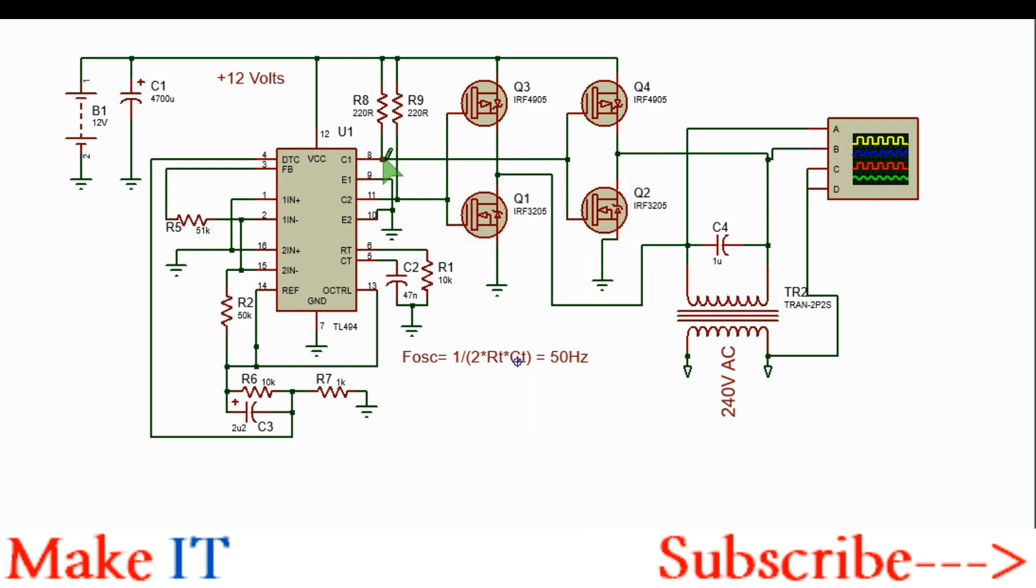When pin 8 is low and pin 11 is high, Q1 and Q4 will conduct and current will flow from the positive rail through Q4 through the winding of the transformer and through Q1 to ground. So that's the second half cycle.